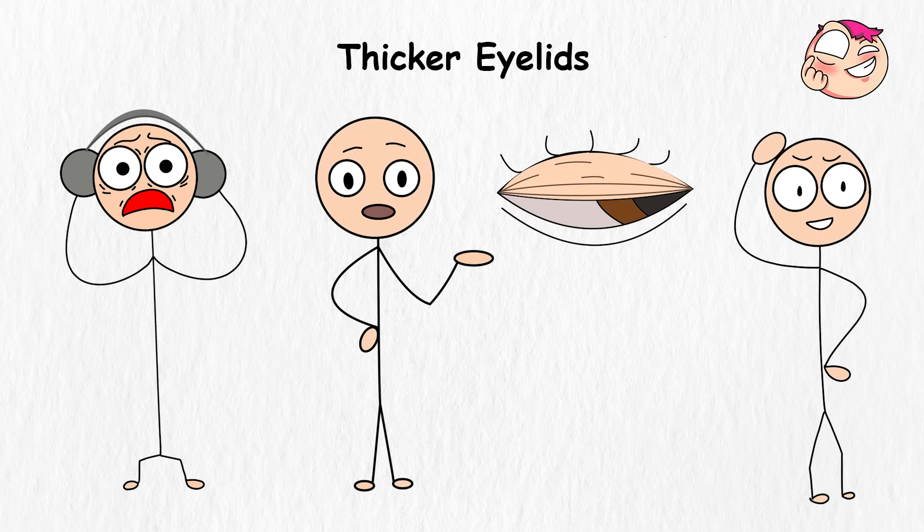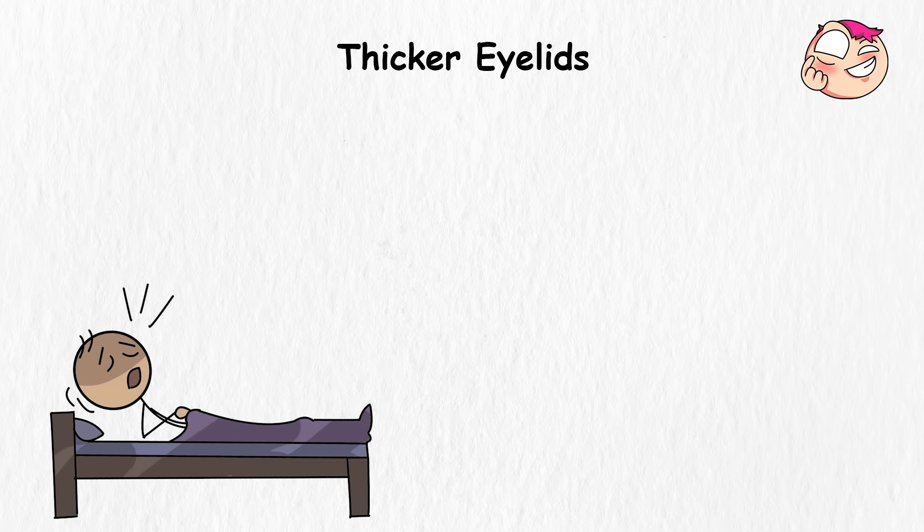So, with thicker eyelids, you'd have a natural defense against harsh light, dust, and debris. Thicker eyelids would also mean less light seepage, and this would mean every nap would feel like hibernation. Basically, catching Z's would never be easier. Unless, of course, you sleep through your alarm.